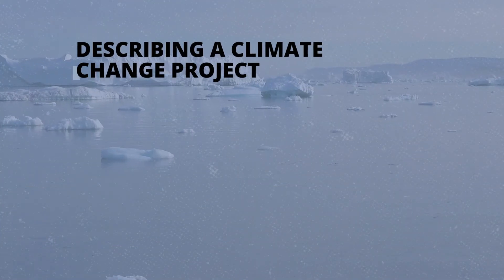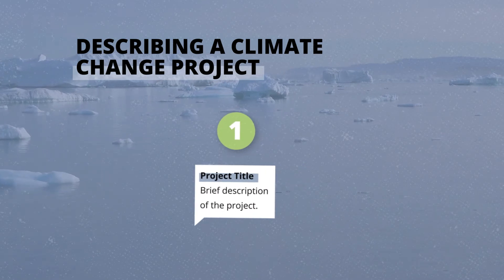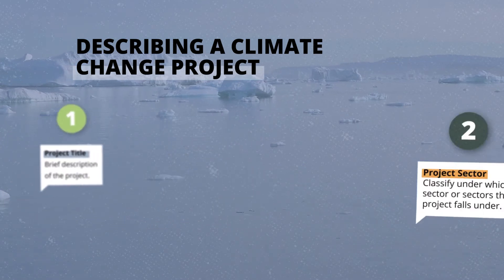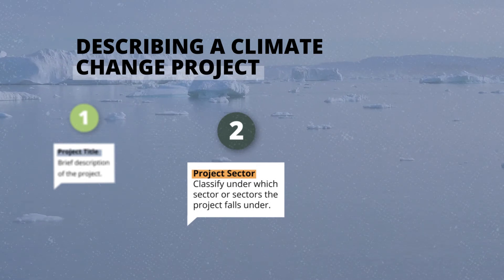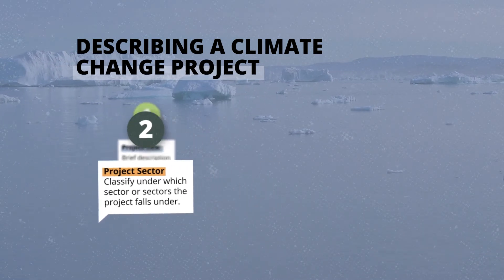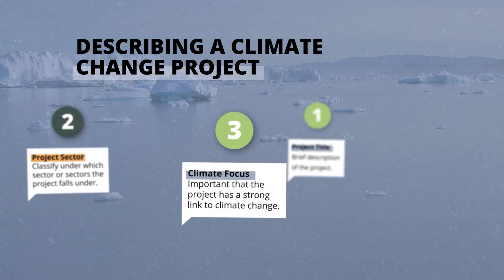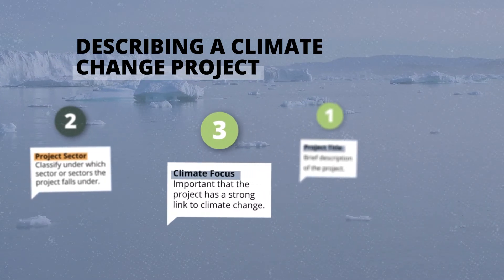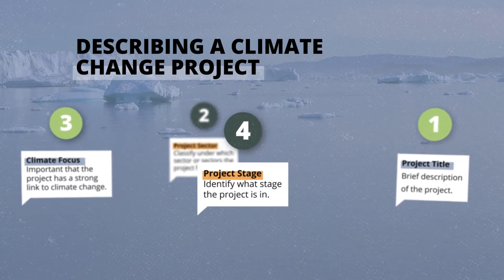When trying to identify or describe a climate change related project, the following should be written down: a project title, which gives a brief description of the project; the project sector, to classify under which sector or sectors the project falls under; the climate focus, ensuring the project has a strong link to climate change; and the relevant project stage.